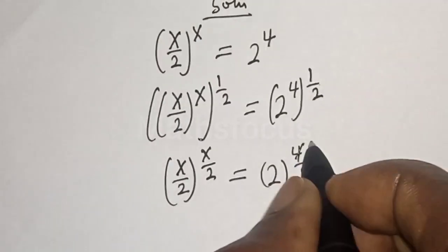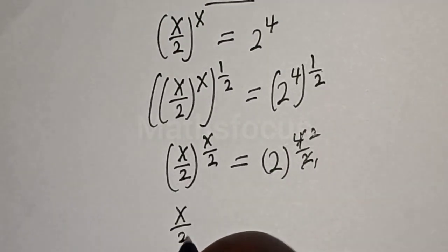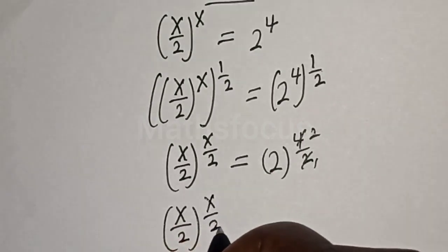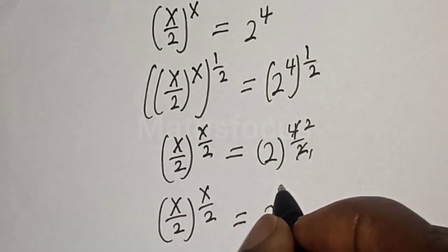2 here 1, 2 here 2. S over 2 to the power of S over 2 is equal to 2 to the power of 2.